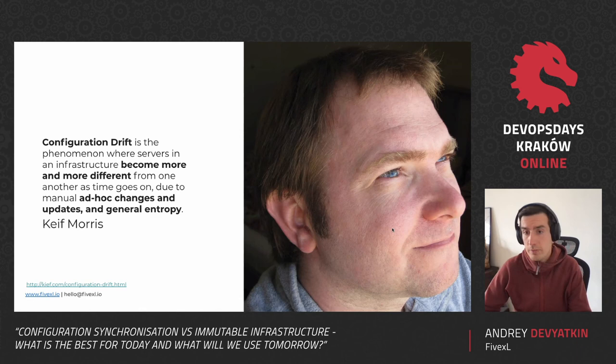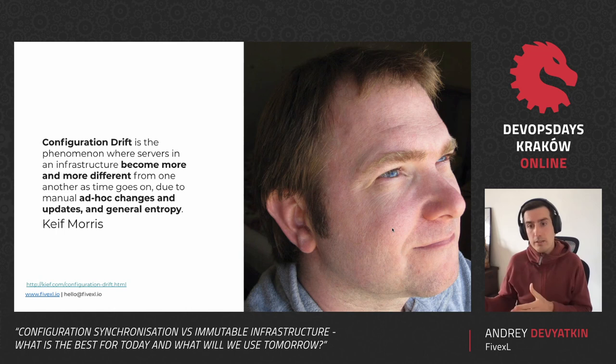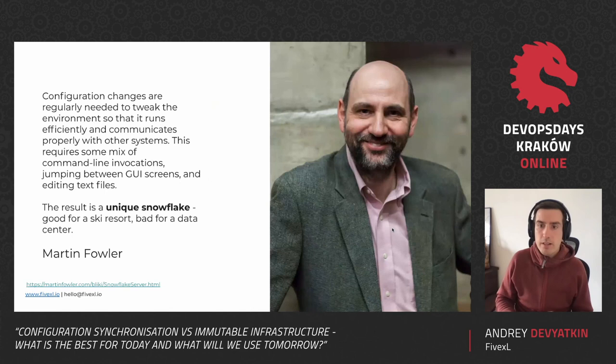Configuration drift is what we call the entropy of servers. Just like you have entropy of systems in physics, in IT we have configuration drift — which is pretty much the same. Changes are done to servers manually, in an ad hoc manner, and over time they accumulate, causing the server to diverge from the intended configuration. Thus, we get more and more configuration drift.